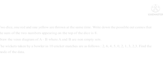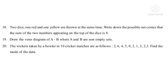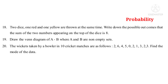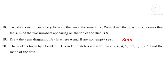Question 18: Two dice, one red and one yellow, are thrown at the same time. Write down the possible outcomes where the sum of the two numbers appearing on top is 8 — from Probability. Question 19: Draw the Venn diagram of A minus B where A and B are non-empty sets — from Sets. Question 20: The wickets taken by a bowler in ten cricket matches are: 2, 6, 4, 5, 0, 2, 1, 3, 2, 3. Find the mode of the data — from Statistics.